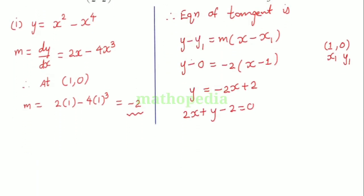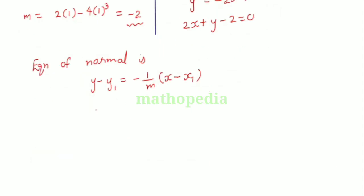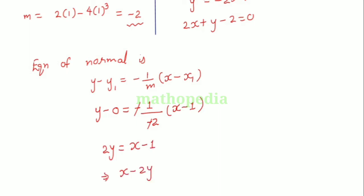Now finding the equation of normal: y minus y1 is equal to minus 1 by m into x minus x1. This implies y minus 0 is equal to minus 1 by minus 2 into x minus 1. Simplifying, 2y is equal to x minus 1. So this implies x minus 2y minus 1 is equal to 0. This is the equation of normal.